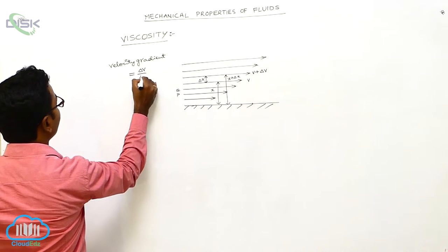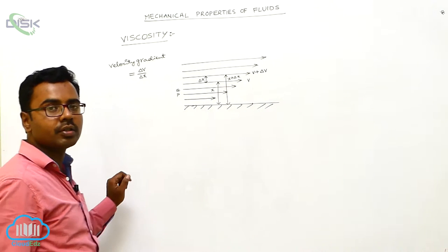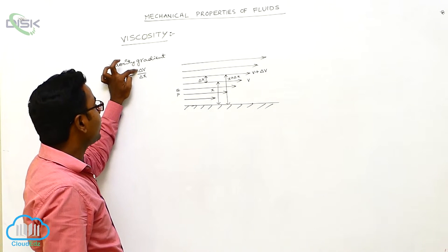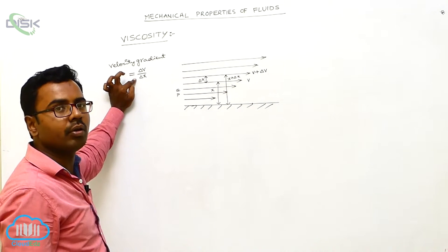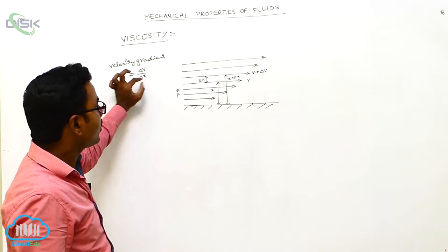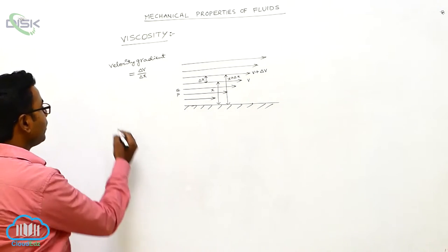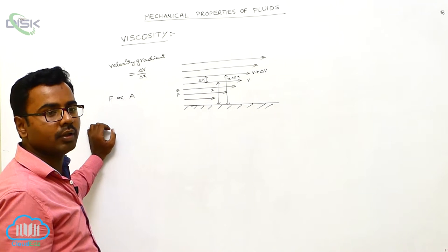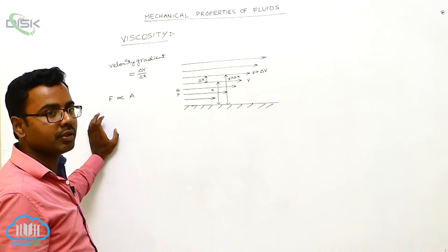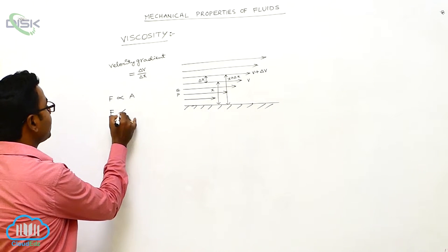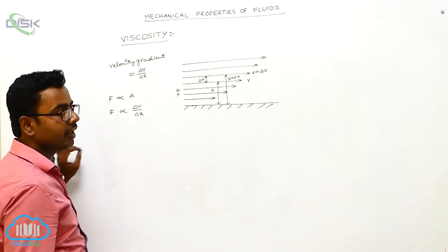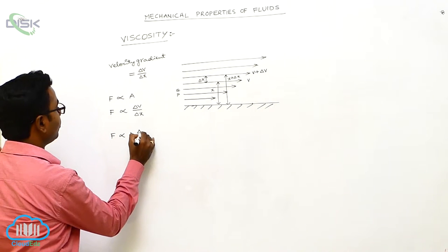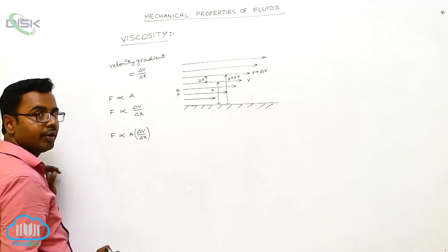The velocity gradient is defined as ΔV/ΔX — the change in velocity per unit distance. ΔV is the change in velocity and ΔX is the distance. Now, the viscous force F between the two layers is directly proportional to the area A of each layer, and also directly proportional to the velocity gradient ΔV/ΔX. Combining these, F is proportional to A × (ΔV/ΔX).